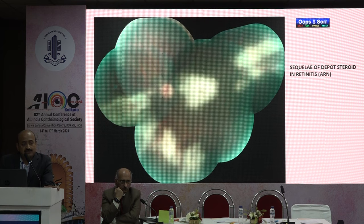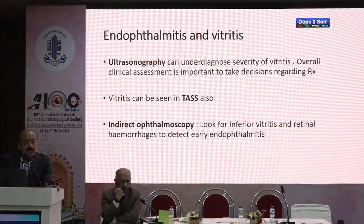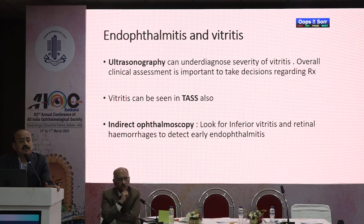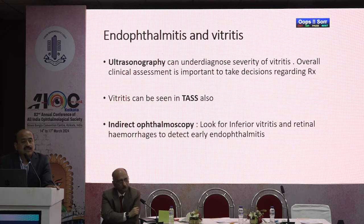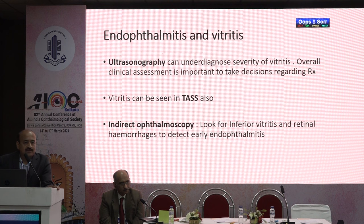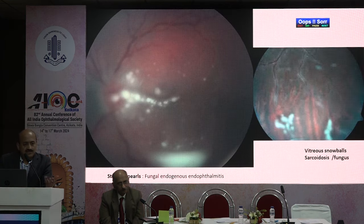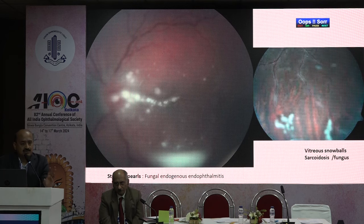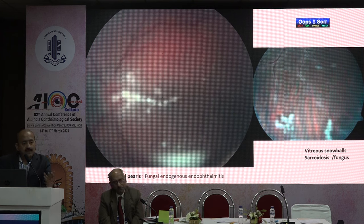This is a case of ARN that was treated with periocular steroid, resulting in macular involvement. Any case of vitritis — don't take it lightly, rule out infective causes before treatment. Non-infective causes like intermediate uveitis are a diagnosis of exclusion. In endophthalmitis, anterior segment signs of cells, flare, and hypopyon make it easier to diagnose, but when the anterior segment is opaque and you cannot see the fundus, ultrasound may not be reliable — rely on anterior segment signs and the overall clinical picture. The distribution of opacities can point to diagnosis — in fungal endophthalmitis, a string-of-pearls pattern points toward Candida infection.